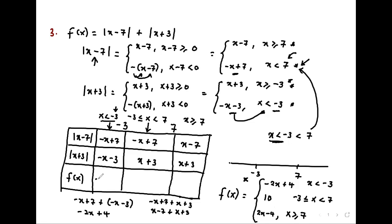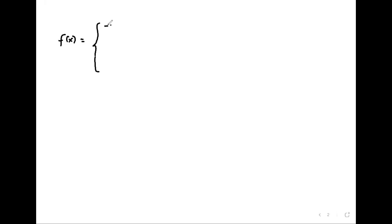Now we have a function that we are able to sketch. So f of x equals: negative 2x plus 4 when x is less than negative 3; 10 when negative 3 less or equal to x less than 7; and 2x minus 4 when x is greater or equal to 7.